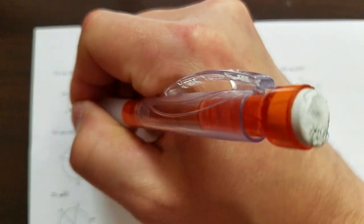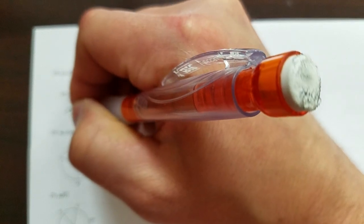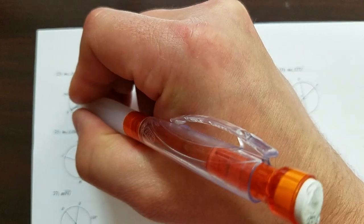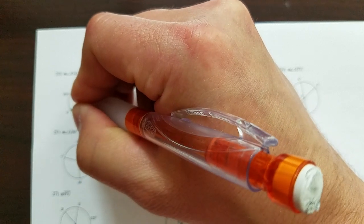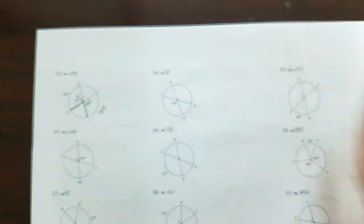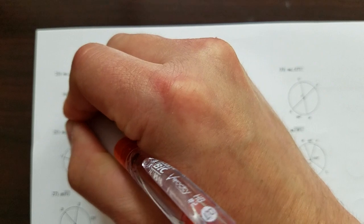If HJ is a diameter, then it's 180 degrees. Well, then K, G, J has to add with 105 to make 180, because that's a straight line. So it's got to be 75 degrees.